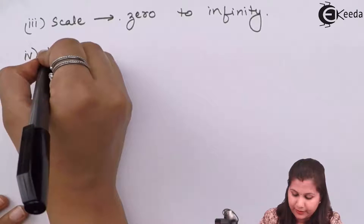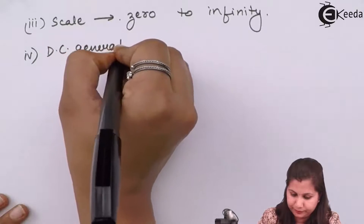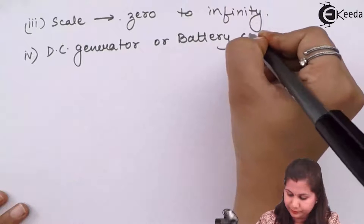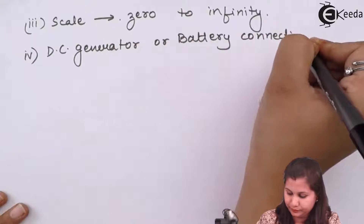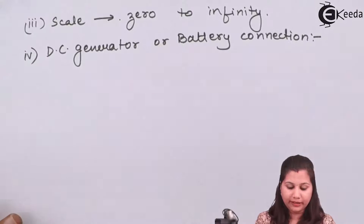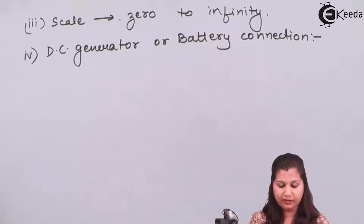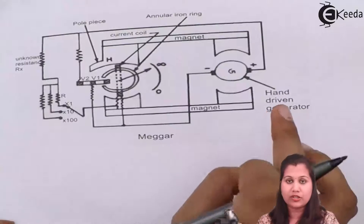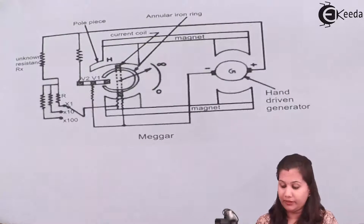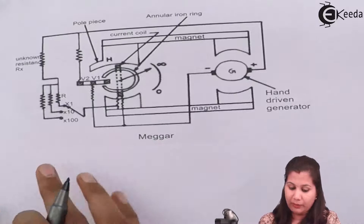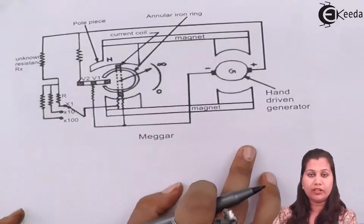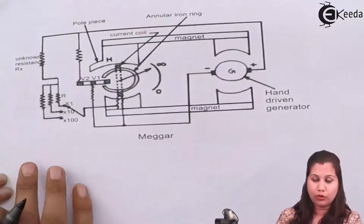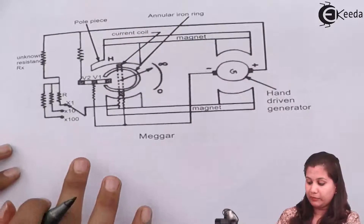The next component is the DC generator or the battery connection. The voltage required in the circuit is provided by the hand-driven generator, as you can see in the diagram. This hand-driven generator is used when manually operating the Megger. When using an automatic Megger, a battery or an electronic voltmeter can be used instead. So the voltage is provided by this generator.